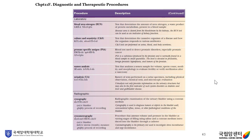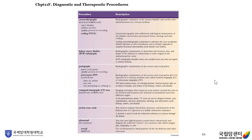Semen analysis and urinalysis (UA) are also used. Cystography is a radiographic examination of the urinary bladder using a contrast medium. Cystometrography is a procedure that assesses volume and pressure in the bladder at varying stages of filling, using saline and a contrast medium introduced through a catheter. KUB radiography (kidney, ureter, bladder) is the basic radiographic examination to determine the location, size, and shape of the kidneys in relationship to the body.